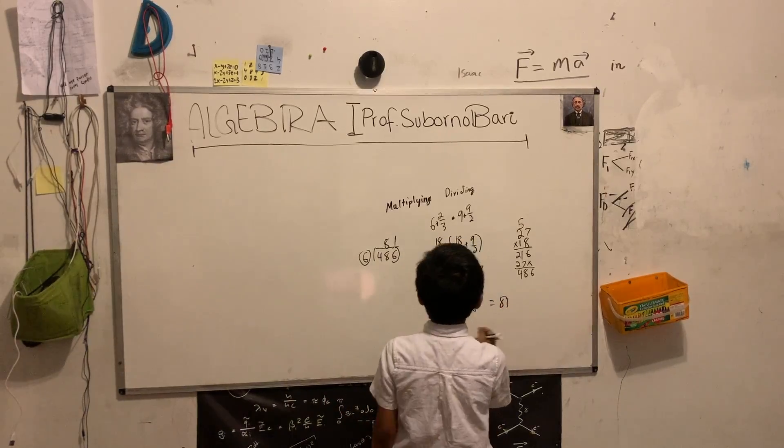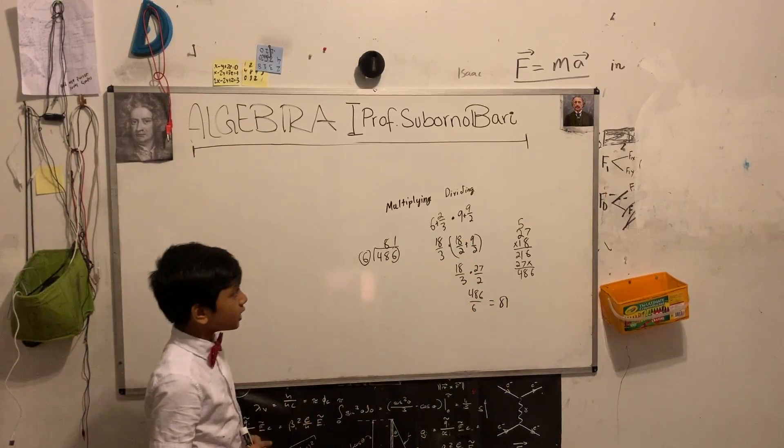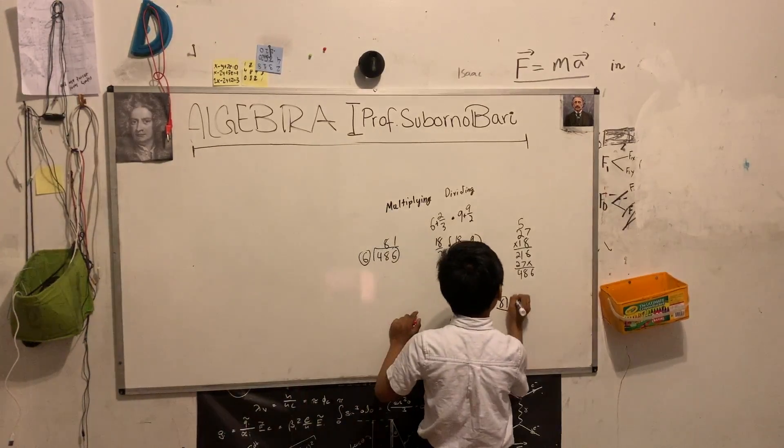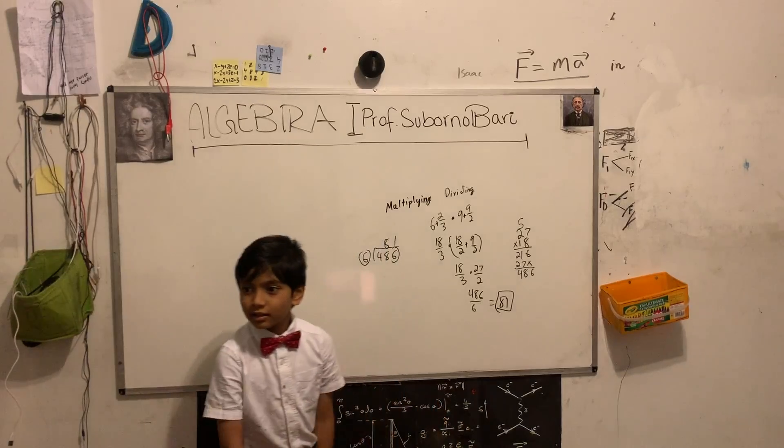So, we get the answer 81. So, 6 2/3 times 9 1/2 is going to be equal to exactly 81.